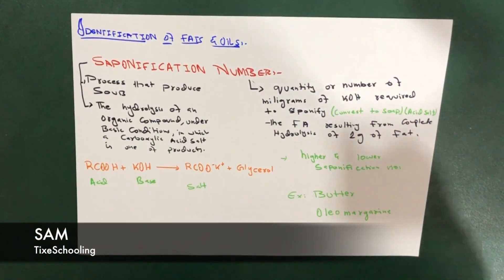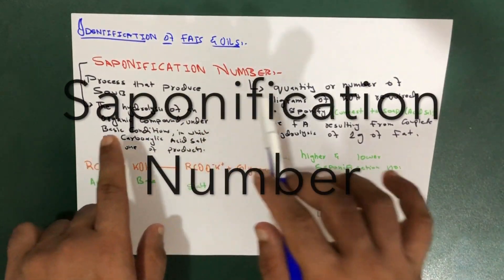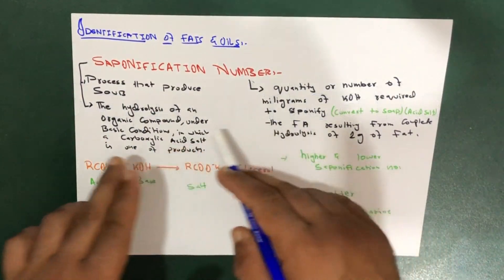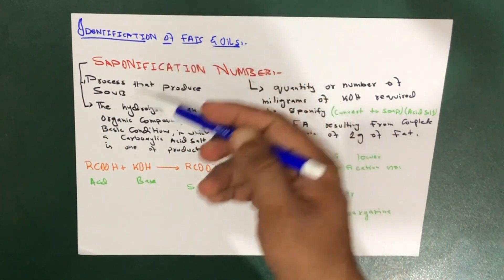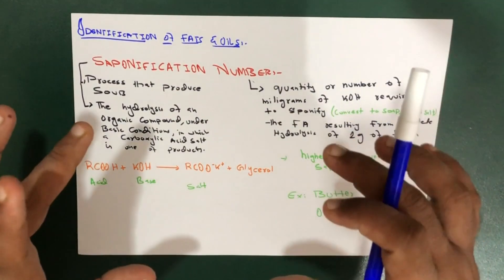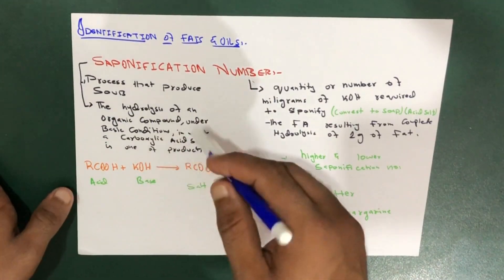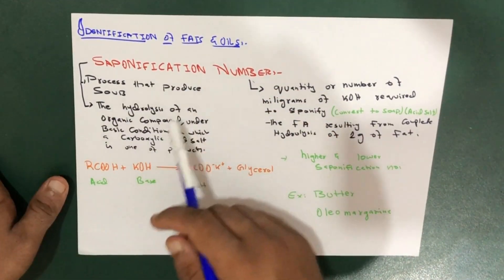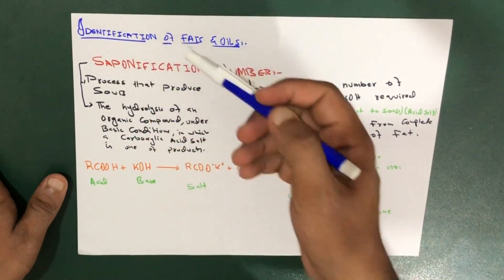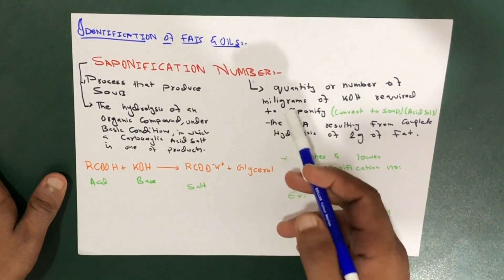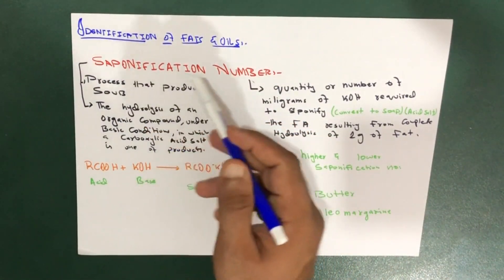Hello YouTube, this is Sam from Tiger Schooling. In this session we're going to talk especially about the saponification number. Before discussing the saponification number, we will talk about saponification and why we are actually studying the saponification number. We use the saponification number for the identification of fats and oils, but first we must have an idea regarding saponification itself.